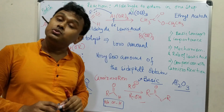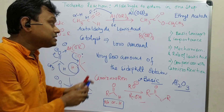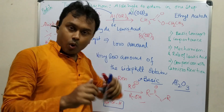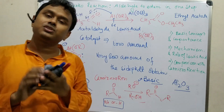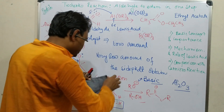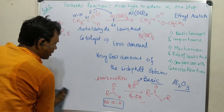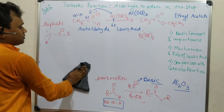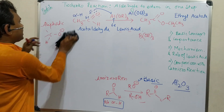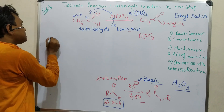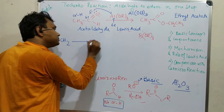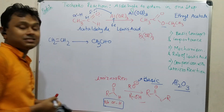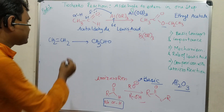To summarize the differences: Cannizzaro — no alpha hydrogen, strong base; Tishchenko — alpha hydrogen optional, Lewis acid (nearly neutral). Regarding the industrial cycle: the Wacker process converts ethylene to acetaldehyde, and from acetaldehyde the Tishchenko reaction gives ethyl acetate directly. This forms an efficient industrial chain for ethyl acetate production.